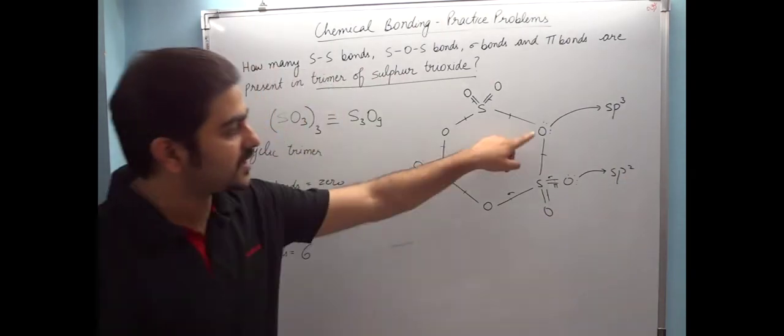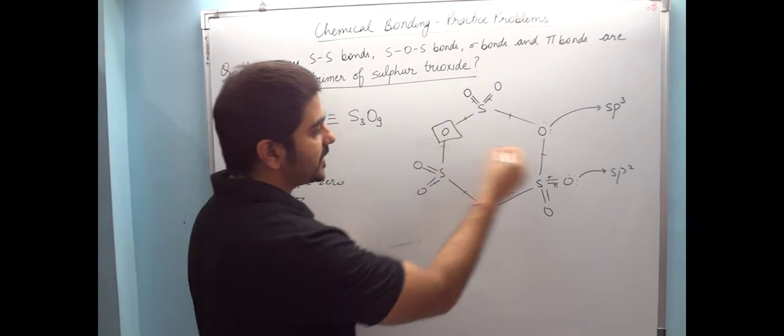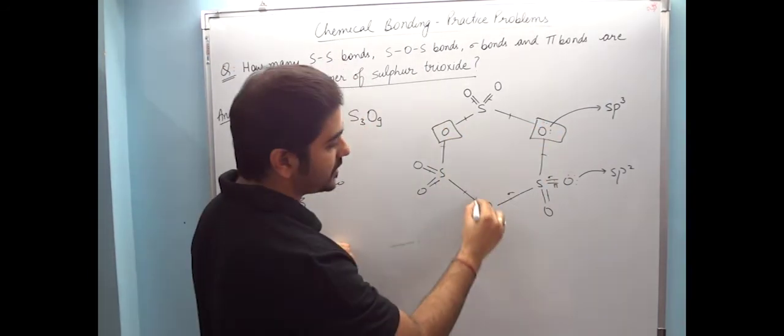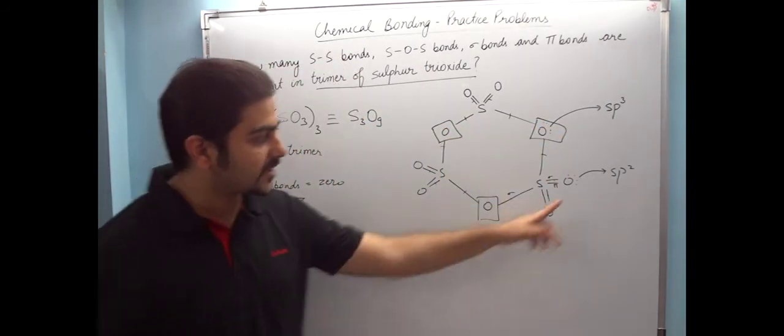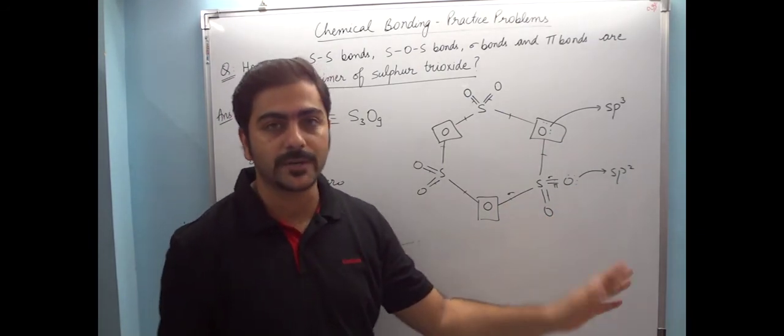So all the oxygens that have 2 single bonds are sp3. This is sp3, this is sp3, and this is sp3. And the remaining oxygens, which are double bonded oxygens, are sp2 hybridized.